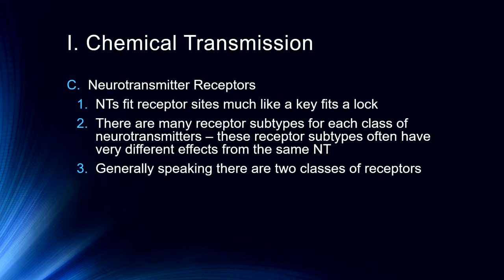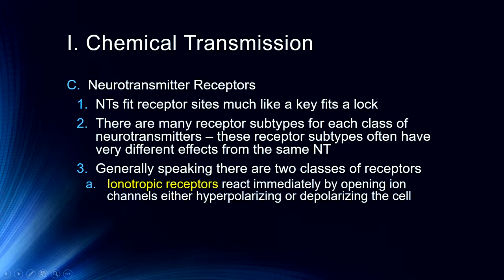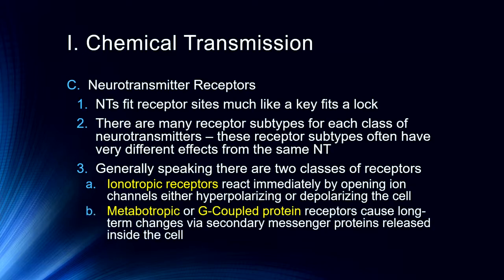Generally speaking, there are two classes of receptors. Ionotropic receptors react immediately by opening channels and either hyperpolarizing or depolarizing the cell depending on which channels they open. Metabotropic, or G-coupled protein receptors, cause longer-term changes in a neuron via secondary messenger proteins that are released inside the cell, changing the metabolic properties of the cell — functioning very differently from the ionotropic receptors, which react immediately.